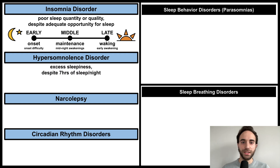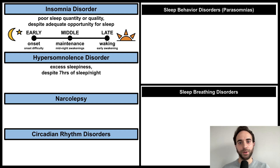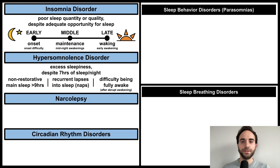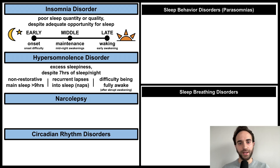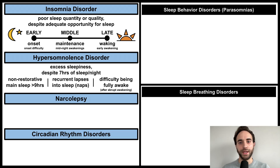Hypersomnolence disorder involves excess sleepiness, despite getting an adequate amount of sleep, that is, at least seven hours of sleep per night. This is associated with at least one of the following symptoms: a non-restorative main sleep period of more than nine hours, recurrent lapses into sleep, in other words, frequent naps throughout the day, or difficulty being fully awake after abruptly awakening from sleep.